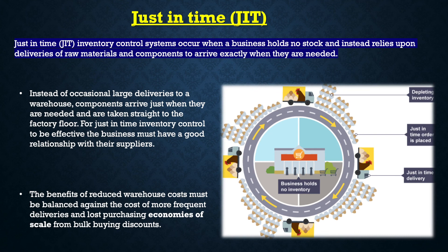Just in time inventory control occurs when a business holds no stock and instead relies upon deliveries of raw materials and components to arrive exactly when they are needed. Instead of occasional large deliveries to a warehouse, components arrive just when they are needed and are taken straight to the factory floor.